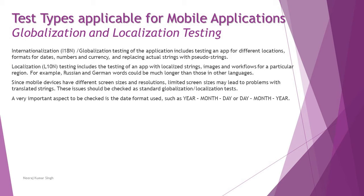Next is globalization and localization testing. Globalization and localization refer to ensuring that if an application is meant for a particular group of people, that is localization. If the app can be used by anyone across the world, it is called globalization, also known as internationalization — abbreviated as I18N, because there are 18 characters between I and N. Similarly, localization is called L10N because there are 10 characters between L and N. Internationalization testing includes testing an app for different locations, date formats, numbers, and currency, and replacing actual strings with pseudo strings.